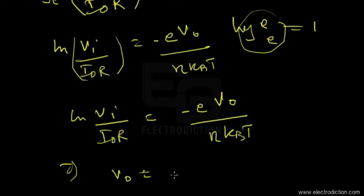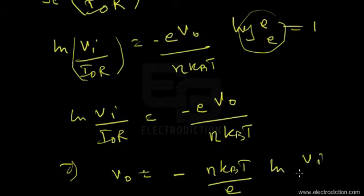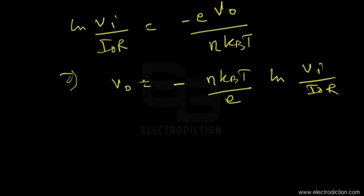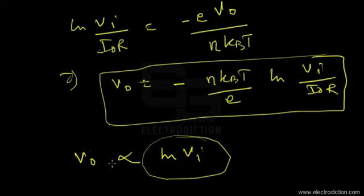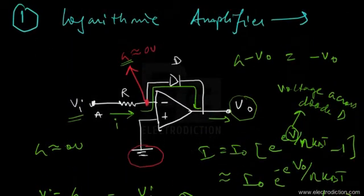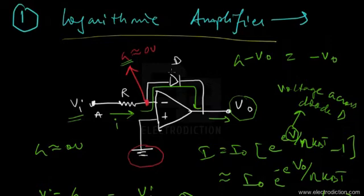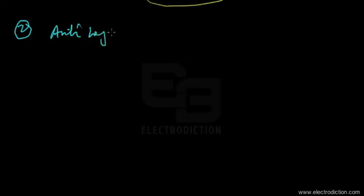Rearranging this equation, we get: VO = −(ηkBT/e) · ln(VI/I₀R). Looking at this result, the output voltage is directly proportional to the logarithm of the input voltage. That is why this circuit is called a logarithmic amplifier — the output produced equals the logarithm of the input voltage. Now let's move on to the second circuit: the anti-logarithmic amplifier.